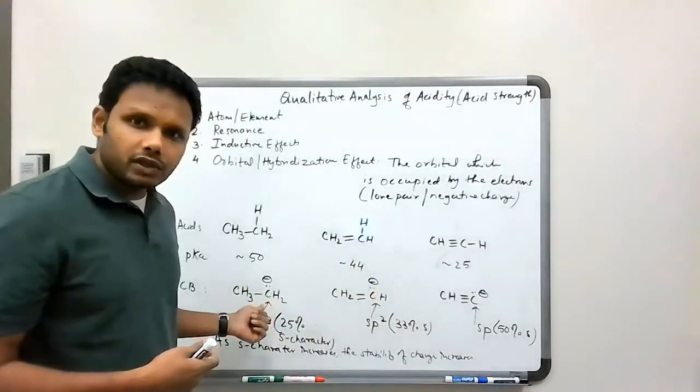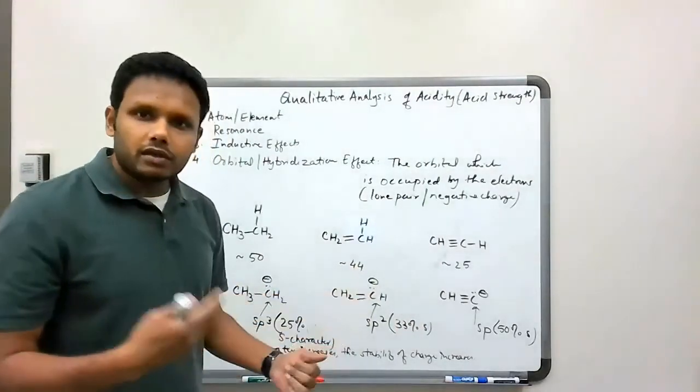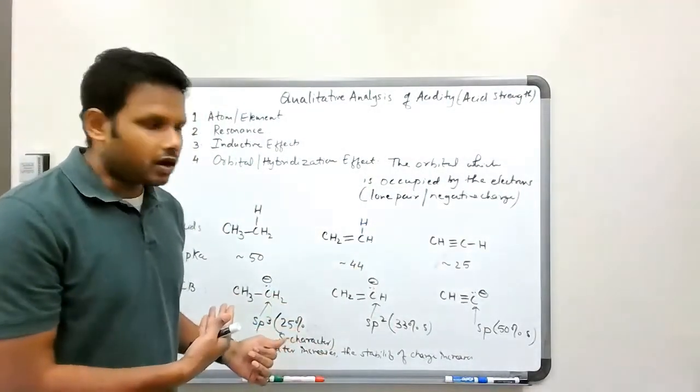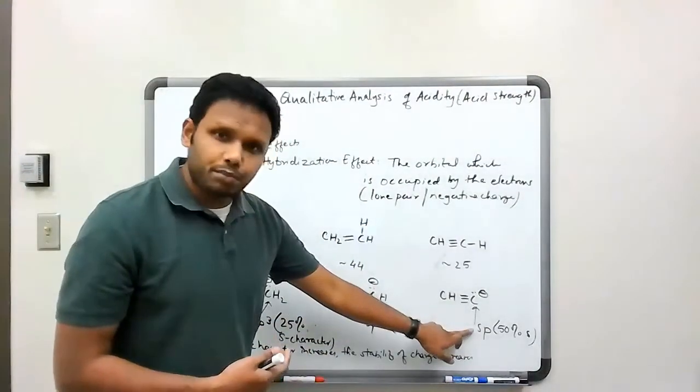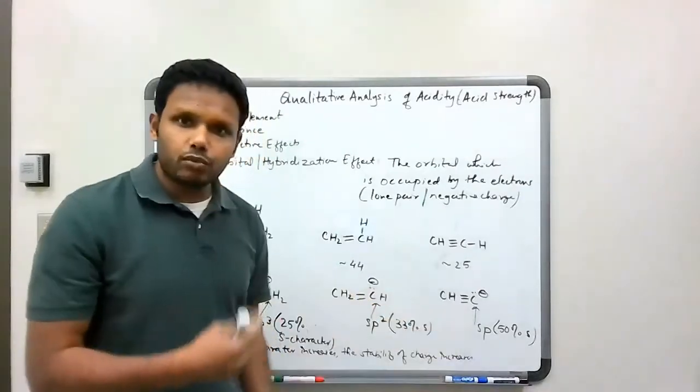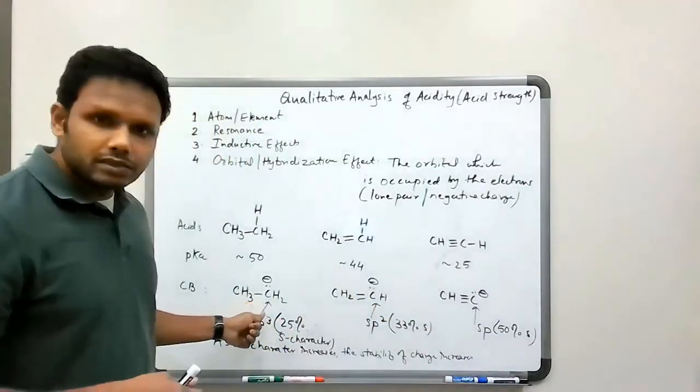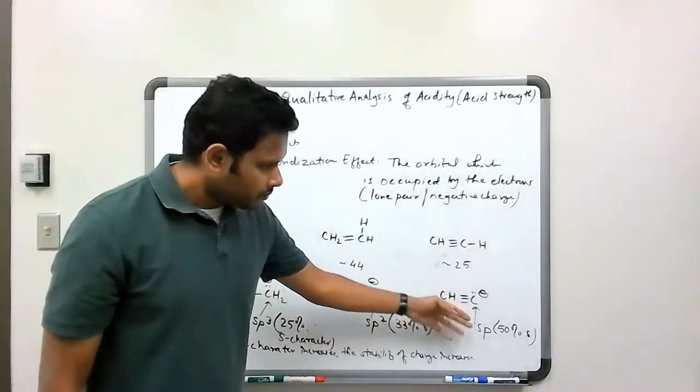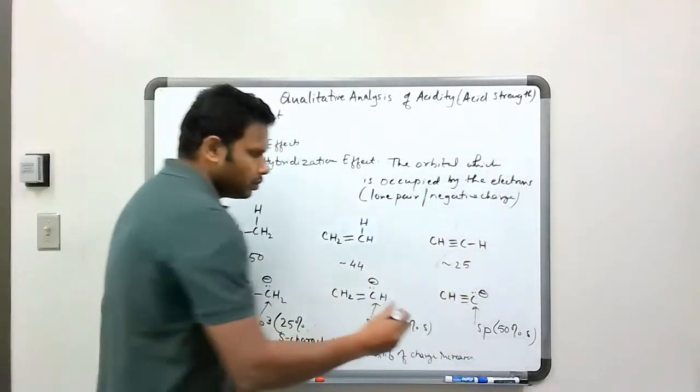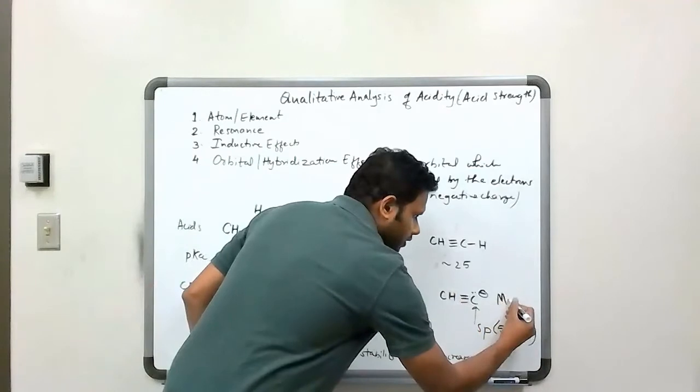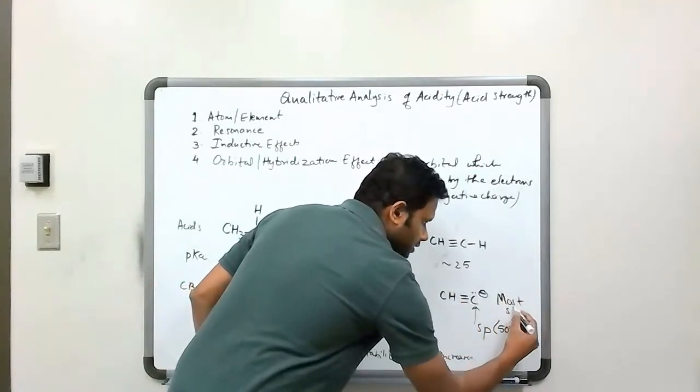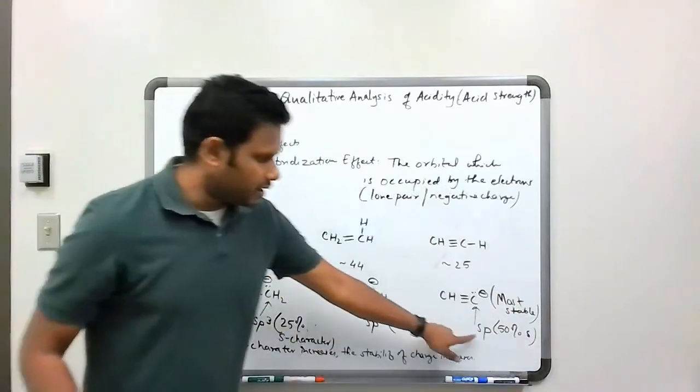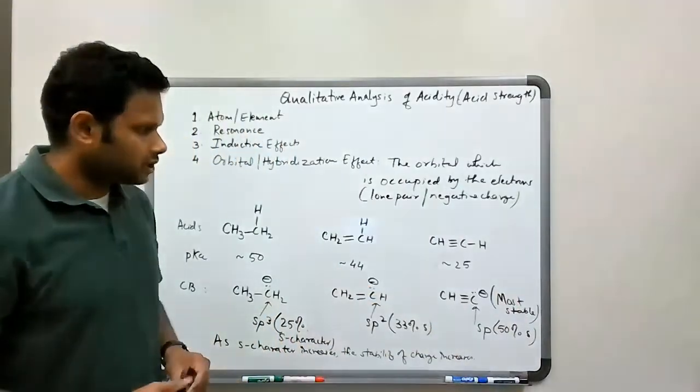The electronegativity of the carbon atom is not a constant. It depends on the hybridization of the carbon atom, and an sp hybridized carbon is the most electronegative, and an sp3 hybridized carbon is the least electronegative. So basically the stability increases, so this, among all of these, is the most stable, and that stability is explained by the sp nature of hybridization.